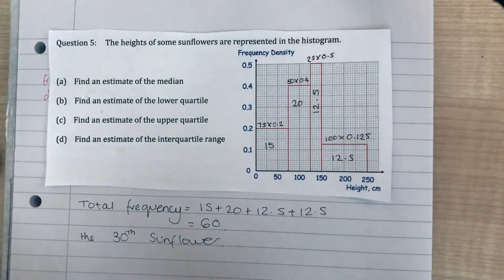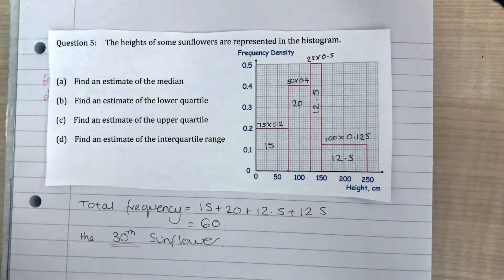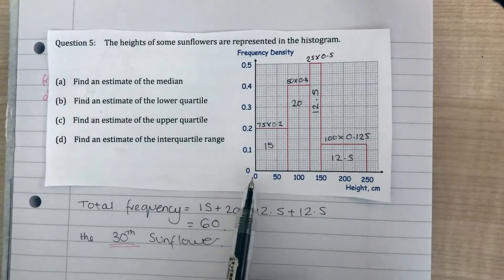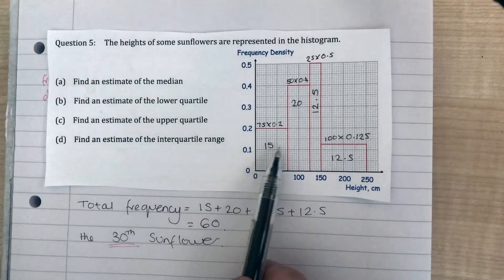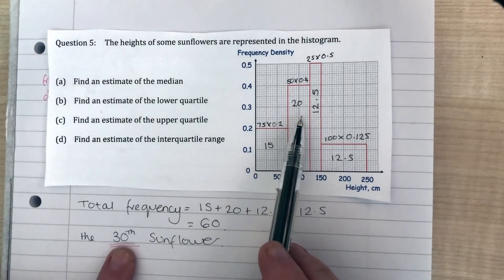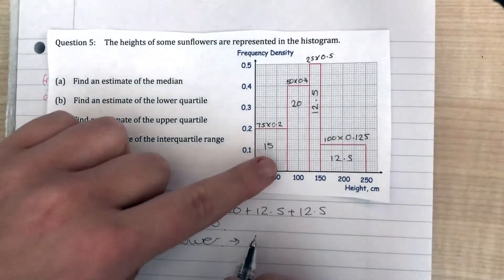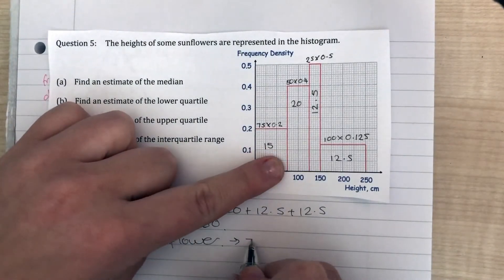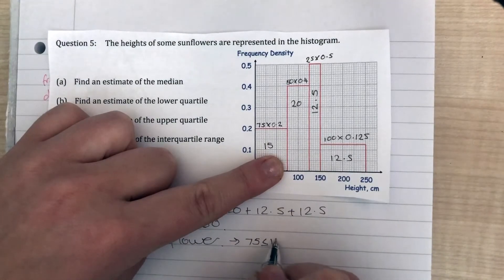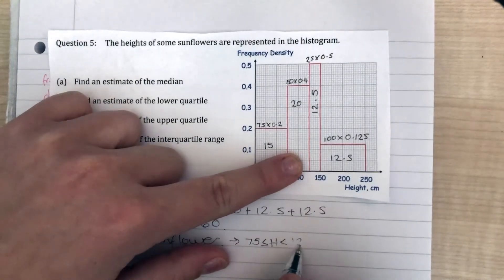We've got to find the class that contains the 30th sunflower. All we do is count. So 15 sunflowers, and in here there's 20, so altogether I'm up to 35. If I need the 30th, it must be in here somewhere. So we know that the class is between 75 and 125 centimeters tall.